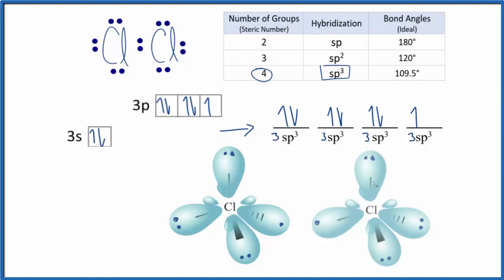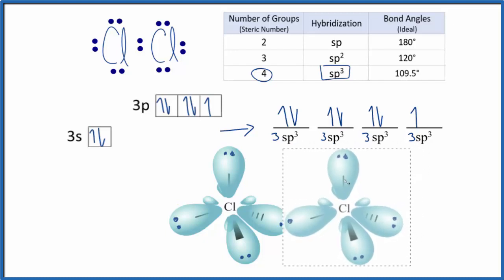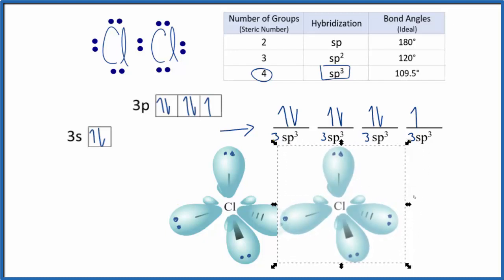So now we can overlap these two chlorine atoms. This orbital here forms a single bond, a sigma bond right here. And this gives us the correct molecular geometry and placement of these lone pairs around the Cl2 molecule.